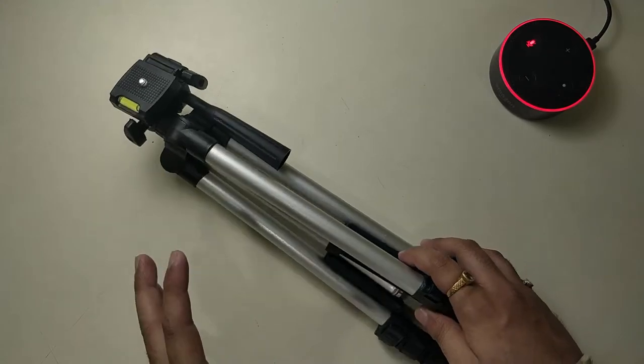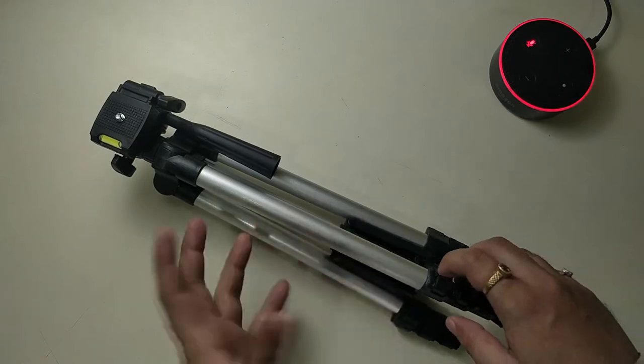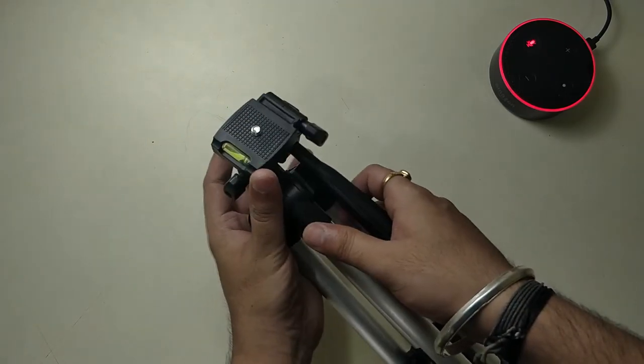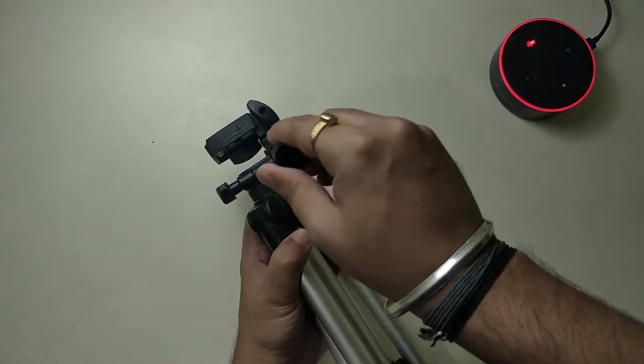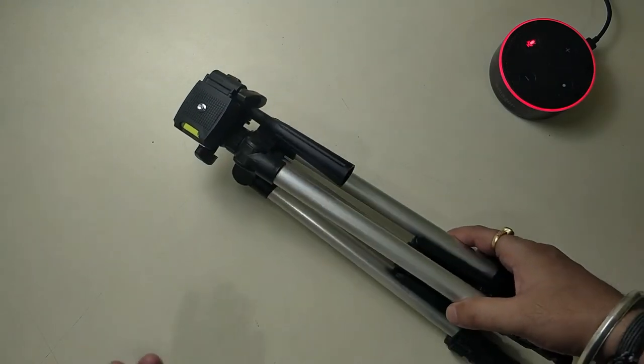Talking about the tripod initial impressions, the quality is totally average. The quality of aluminum and plastic is totally average. You do get a level meter over here and we do get this mechanism for panning shots, like horizontal and vertical panning shots, so that's a pretty nice thing.